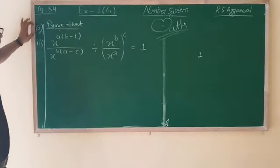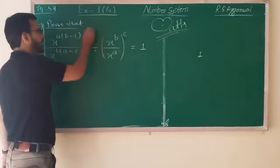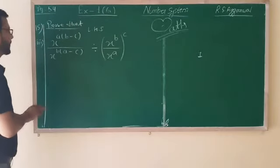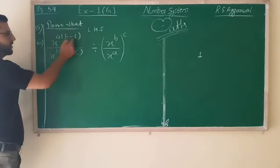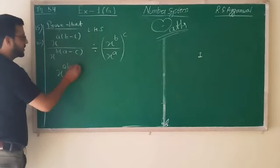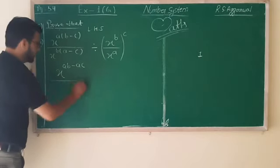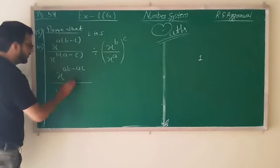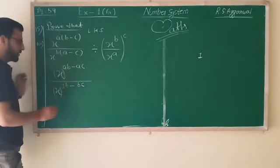Question number 15, part C. Again proving question - prove that this value is equal to 1. So now here we will use left hand side, prove to 1. So what we have in the closed bracket? We will write it: a b minus c.